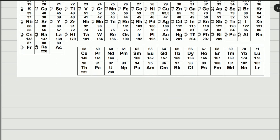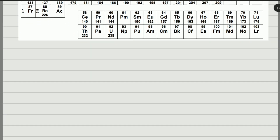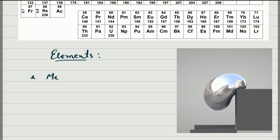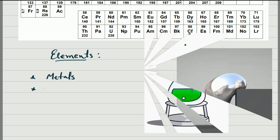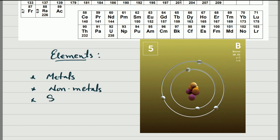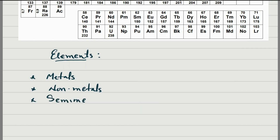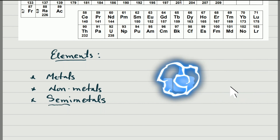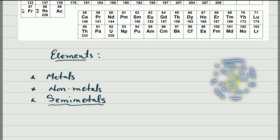Those three groups are metals, non-metals, and semi-metals. The metals make up the largest amount of elements in the periodic table — the majority of the elements are metals. The minority will be the semi-metals. Semi-metals are elements that are not metals and not non-metals; they are in between.